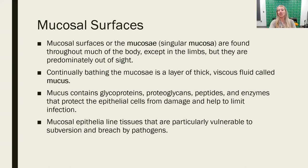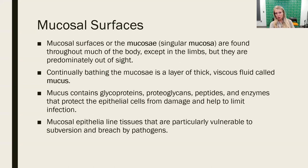Let's review mucosal tissues. Mucosal surfaces, or mucosae, are found throughout the body except in the extremities — not in the limbs. They're pretty much internal and not directly exposed to the environment. They have a characteristic mucus — that thick, viscous fluid that coats these surfaces — which is where the term comes from.